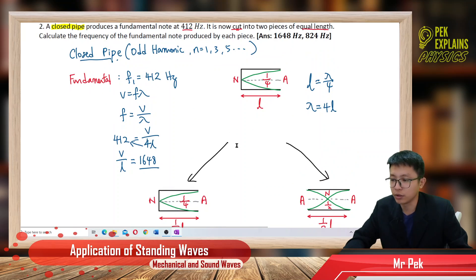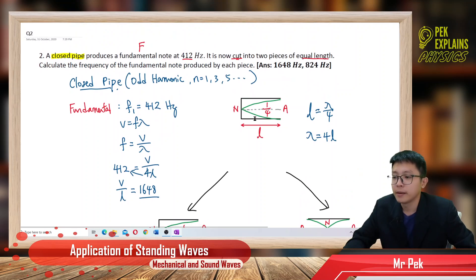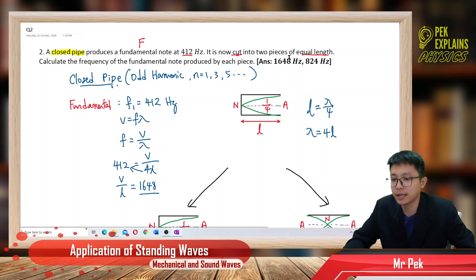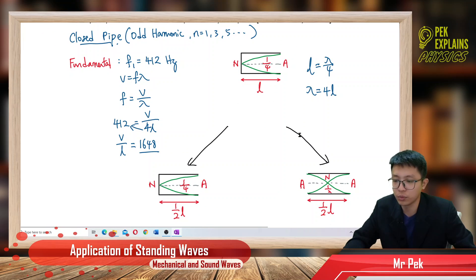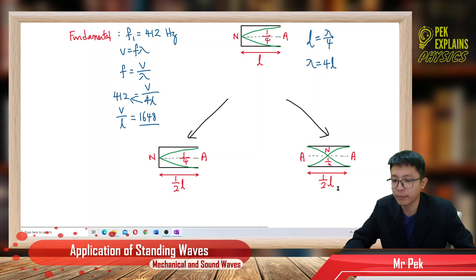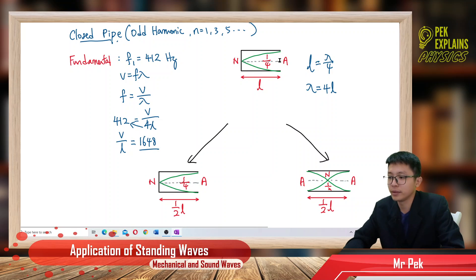Now, the closed pipe is being cut into two pieces of equal length. Each piece has half the original length. When you cut in the middle, you end up with only one closed pipe on one side and the other piece becomes an open pipe.